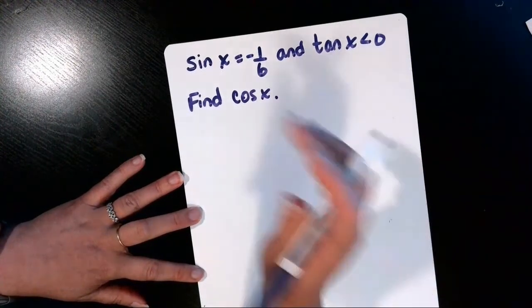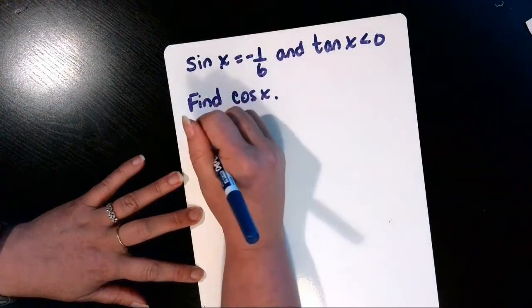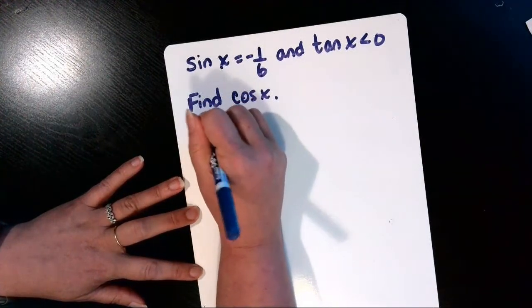So since we have sine, we need the cosine, we're going to go ahead and use the Pythagorean identity.